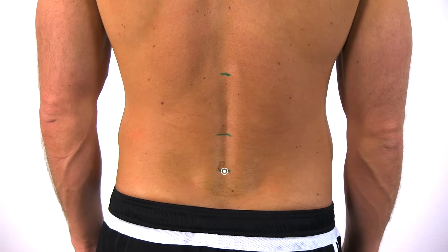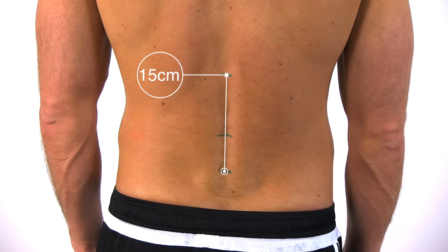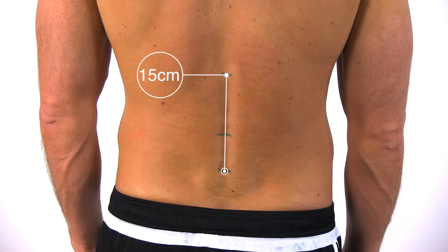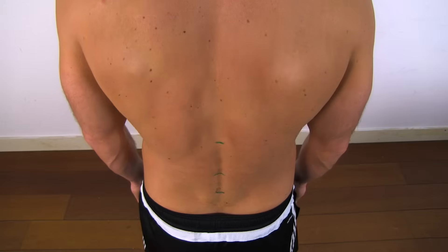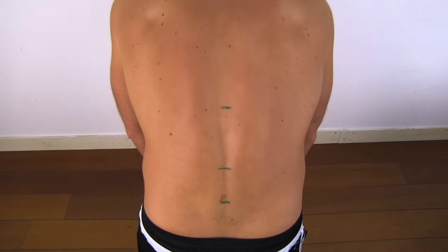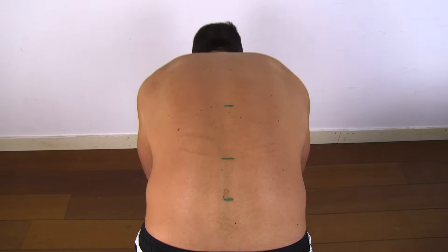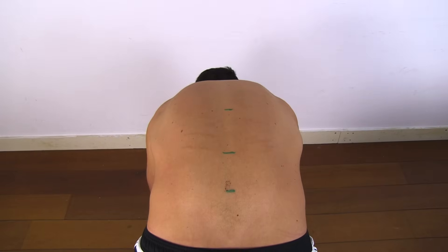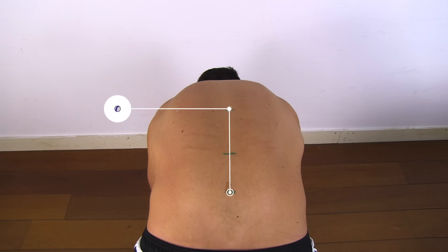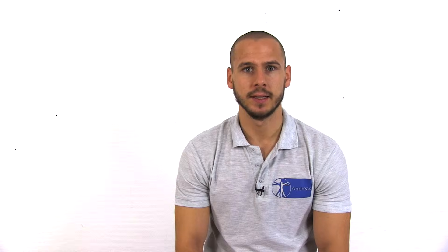Measure the distance between the two points, which should be 15 centimeters. Then the patient flexes as far as possible keeping the legs fully extended, and the distance is measured again. The difference between the two measurements indicates the amount of flexion.